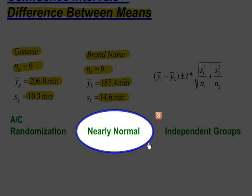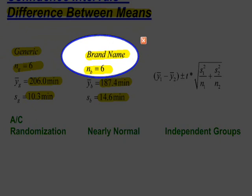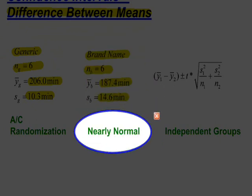The next thing I need to check is nearly normal condition. If I were to take the raw data, and since this was an experiment I would have the raw data, I could turn the data for the generic batteries into a histogram. And then, once again, for the brand name batteries, turn that into a histogram. What I'm looking for with nearly normal isn't necessarily the normality of the histogram. I'm looking more to see if there's an obvious or extreme skewness in one direction or the other. And in this case, we're going to assume that there's not.